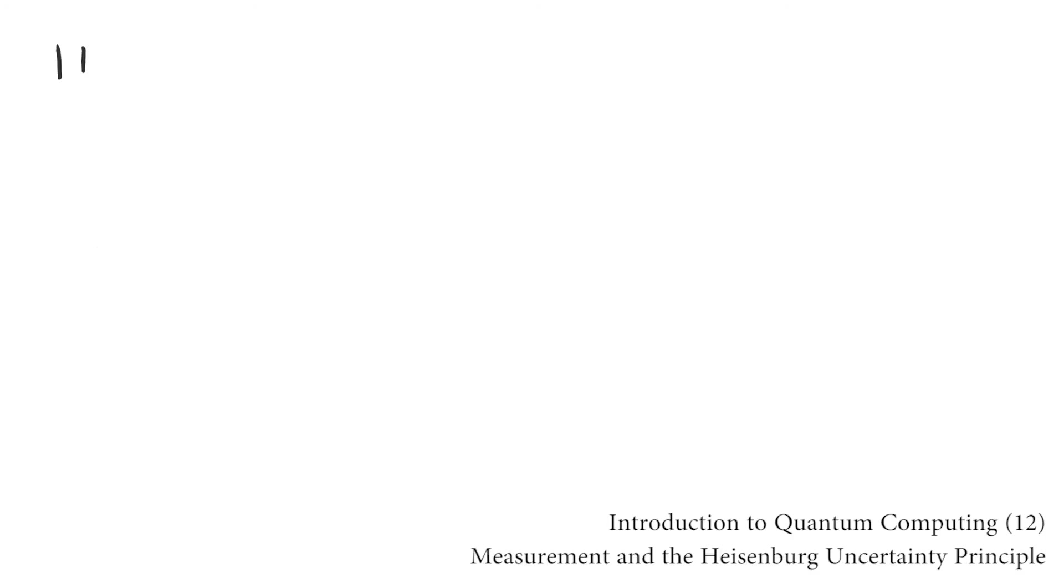When you make a measurement on a qubit, you won't find it to be in a linear combination of the two computational basis states. It has to pick one, because the result of your measurement isn't going to be a linear combination.